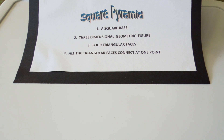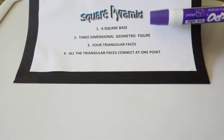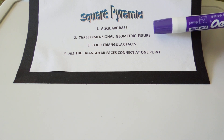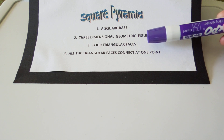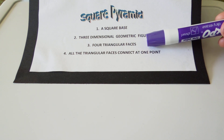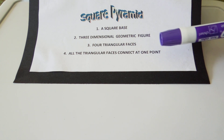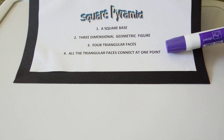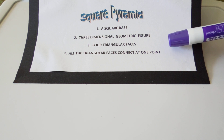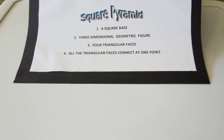A square pyramid is different from other pyramids because it has a square base. Besides having a square base, it is a three-dimensional geometric figure. It has four triangular faces, and all the triangular faces connect at one point. That point is called a vertex. It is also considered a closed shape.